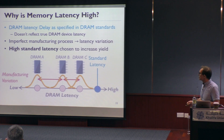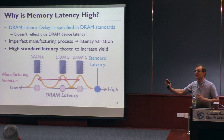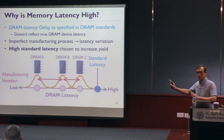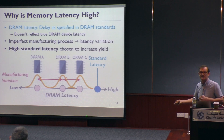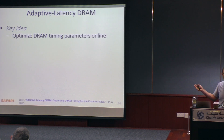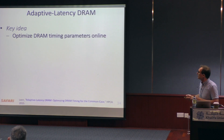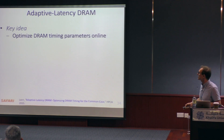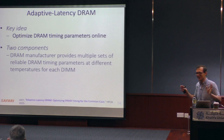Today, we choose a standard latency that's high, with a single set of parameters so that pretty much all manufactured DRAM devices are acceptable — maximizing yield. I think this may be a good approach to accept the devices, but we should not use only a single set of timing parameters for all devices. The idea in Adaptive Latency DRAM, as published in our paper, is that you optimize DRAM timing parameters online as opposed to having a single static set. This is a slightly intelligent architecture.